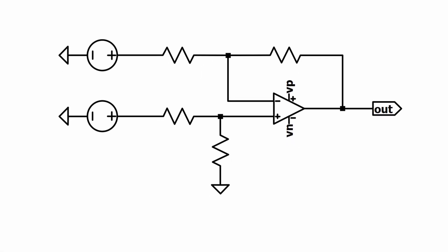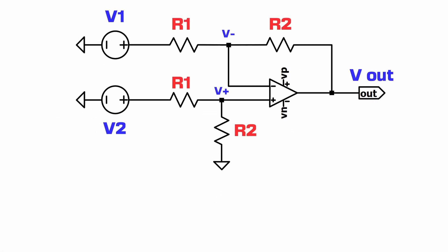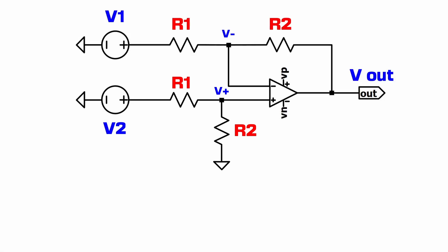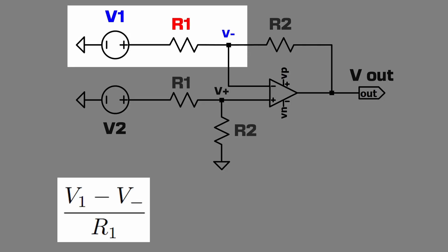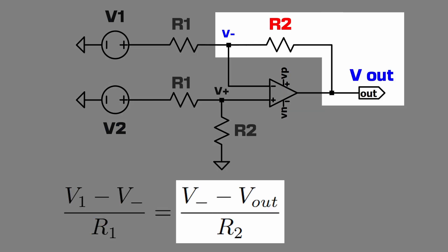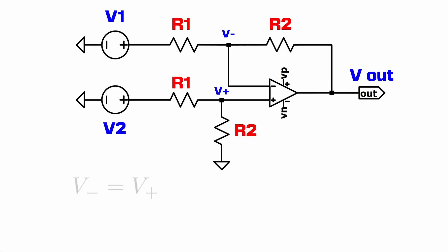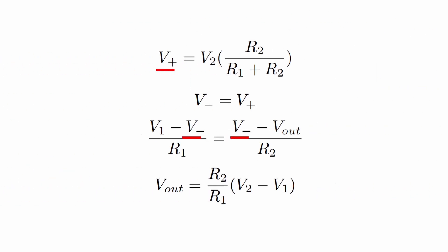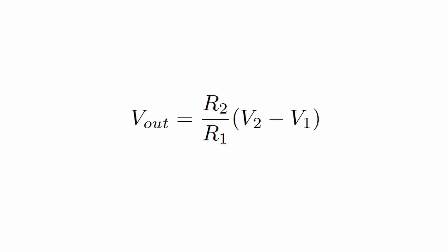In order to determine the gain of this amplifier, we can first solve for the voltage at V plus using a voltage divider. Using Kirchhoff's loop law, we know that the current through this first branch is going to be equal to the current through our feedback loop. Our ideal op-amp condition states that V plus is equal to V minus, therefore we can plug our V plus equation in for V minus. This gives us a V out equation in terms of both V2 and V1.